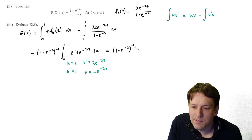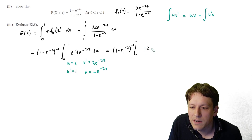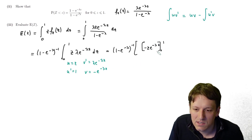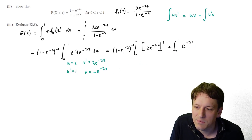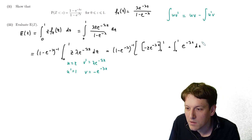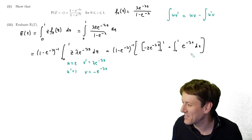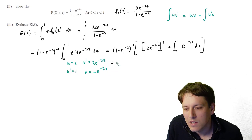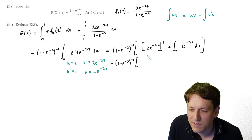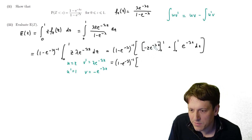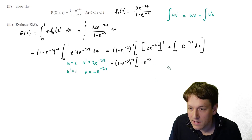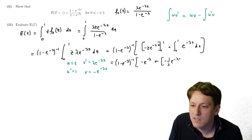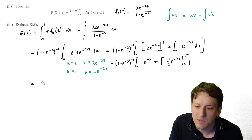Applying the formula: (1 − e^(−λ))^(−1) times [−ze^(−λz) evaluated from 0 to 1, plus the integral from 0 to 1 of e^(−λz) dz]. Substituting limits into the first term: −1·e^(−λ) − 0 = −e^(−λ). Then integrating e^(−λz) gives −(1/λ)e^(−λz), evaluated from 0 to 1.